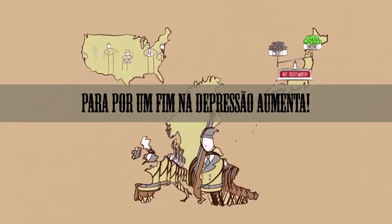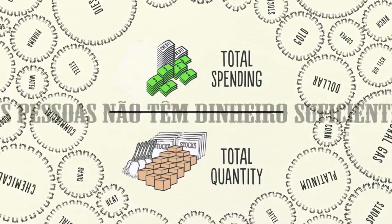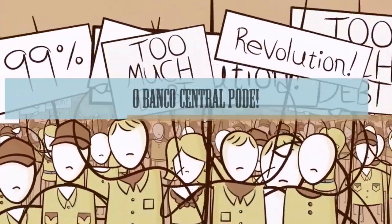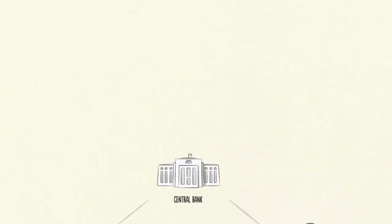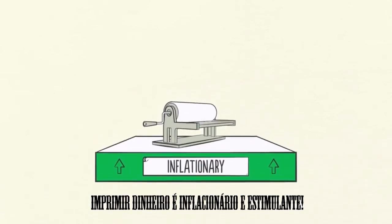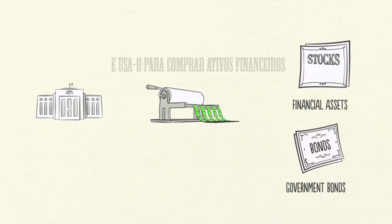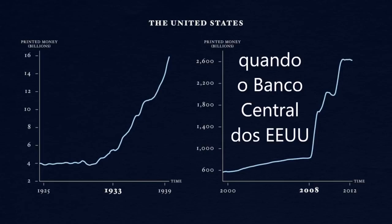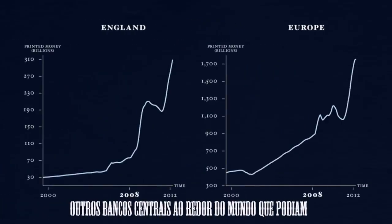Pressure to do something to end the depression increases. Remember, most of what people thought was money was actually credit. So when credit disappears, people don't have enough money. People are desperate for money — and the central bank can print money. Having already lowered its interest rates to nearly zero, it's forced to print money. Unlike cutting spending, debt reduction, and wealth redistribution, printing money is inflationary and stimulative. Inevitably, the central bank prints new money out of thin air and uses it to buy financial assets and government bonds. This happened in the United States during the Great Depression and again in 2008, when the Federal Reserve printed over $2 trillion.